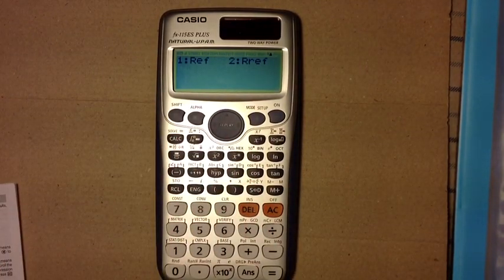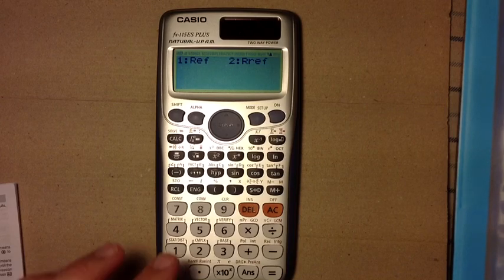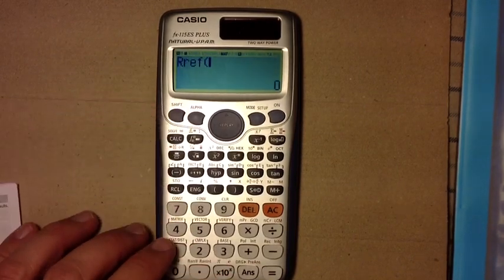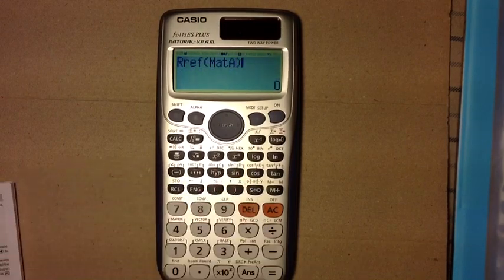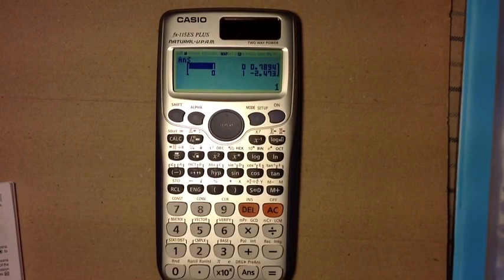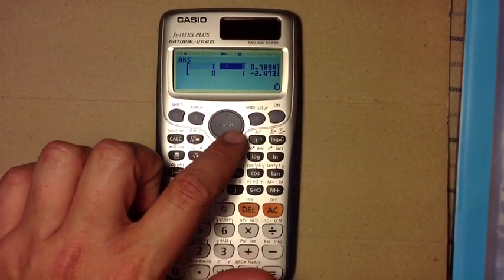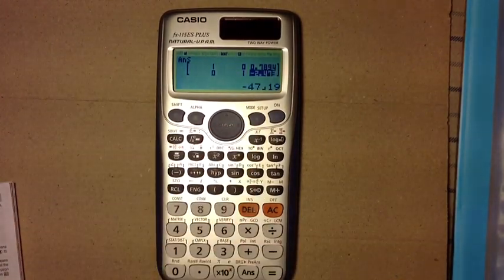The new functions on the Casio FX-115ES are the row reduced functions, the REF and the RREF. So, I'm going to choose option 2 just to show you how it works here. There you go. RREF of matrix A.